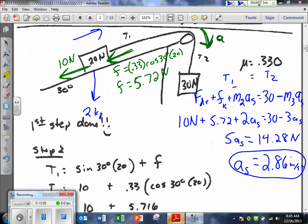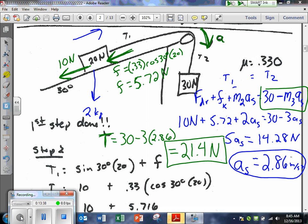Okay. And, now we can put it into either of our two tension formulas. Because, I guess I like this one a little bit better, because it's one less step. So, I'll just say, T is equal to 30 minus 3 times 2.86. And, that tension then equals 21.4 newtons. And, since T1 equals T2, we're done.